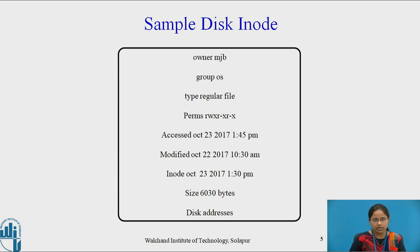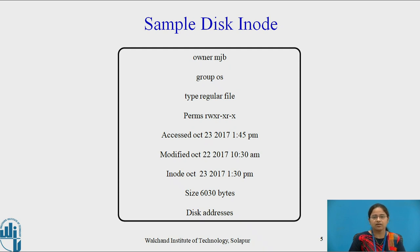This is a sample disk inode where the file is owned by owner MJB. The group owner of the file is 'operating system'. The type of the file is regular file. Permissions to the file are read, write, and execute. These are the date and time for file access and modification. Then the inode change time shows when the inode of that file was changed. Next is the size of the file and the disk address table, which contains the addresses of the discontinuous blocks on disk that hold the file's data. This inode gets changed whenever we change the owner, group, type of the file, or if we change some contents in that file.